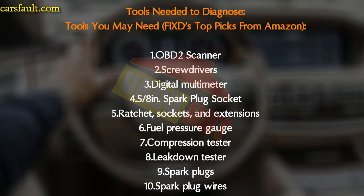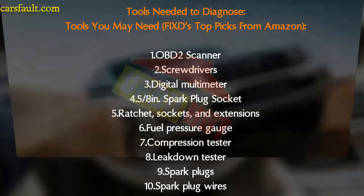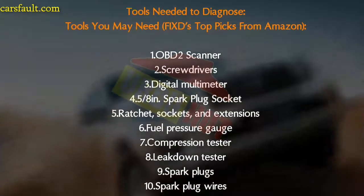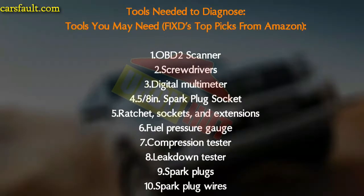Number seven is the compression tester. Number eight is a leak-down tester. Number nine is spark plugs. Number ten is spark plug wires. You can find all these tools on Amazon — the link is in the description, check it out.